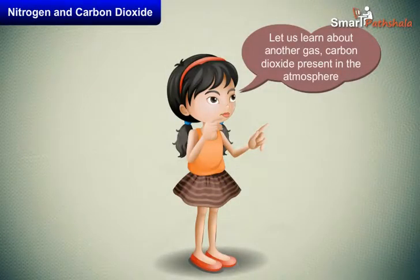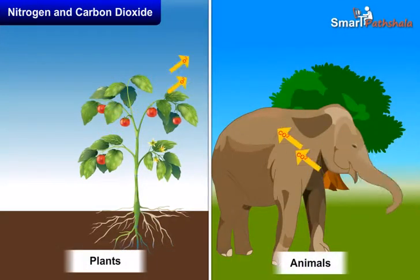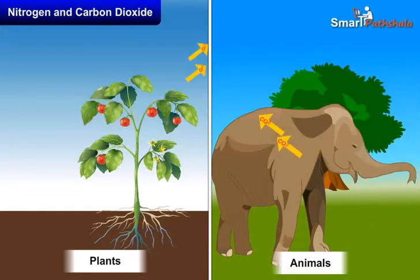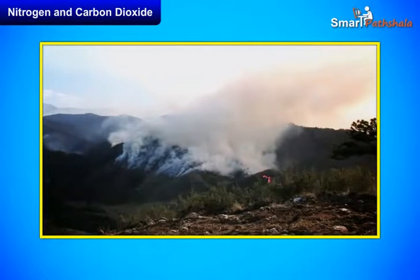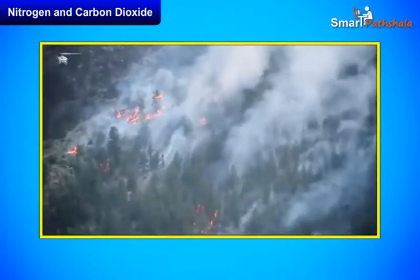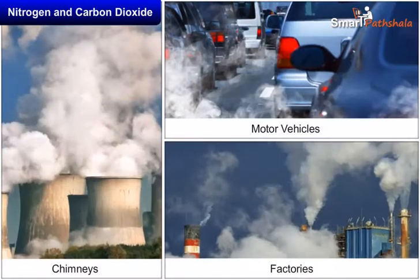Let us learn about another gas — carbon dioxide — present in the atmosphere. We all know that plants require carbon dioxide to synthesize food through photosynthesis. Plants and animals consume oxygen for respiration and produce carbon dioxide. Plants and animal matter on burning also consumes oxygen and produces mainly carbon dioxide and a few other gases. This carbon dioxide is consumed by plants during photosynthesis.